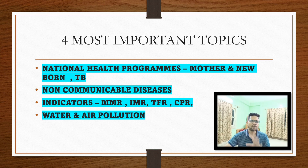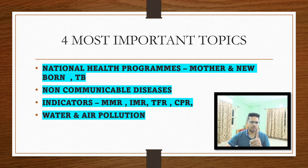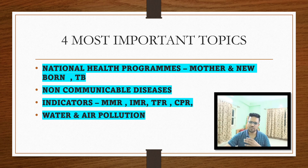The four most important topics of PSM are: first, national health programs related to mother and newborn, and tuberculosis — kindly read all national health programs and any updates, mainly those related to mother, newborn, and tuberculosis. Second, all non-communicable diseases — read about screening, risk factors. Third, health indicators like their formulas and yearly government-published data.